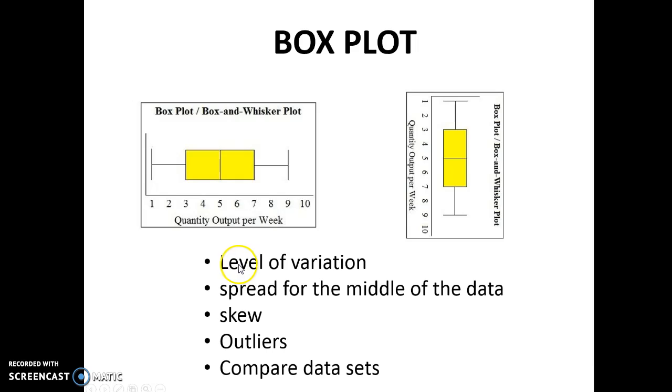So basically, a box plot can tell you the level of variation, that's like how much is going on. So I can see here that the output of a quantity per week is between 1 and 9, with 50% of the data between 3 and 7. That's the spread of the middle data.